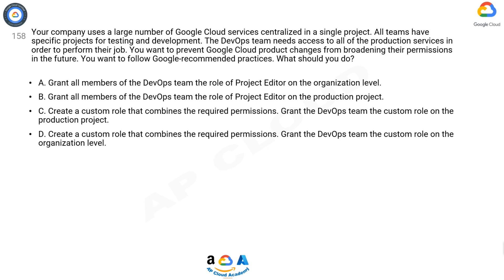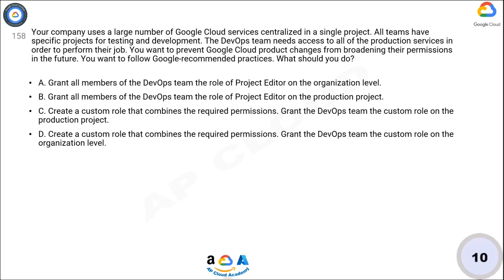Grant the DevOps team the custom role on the production project. D: Create a custom role that combines the required permissions, and grant the DevOps team the custom role on the organization level. Now take 10 seconds to think about the answer.